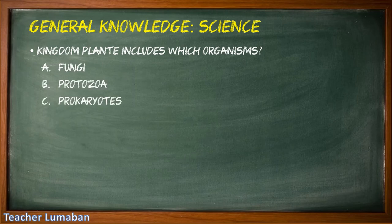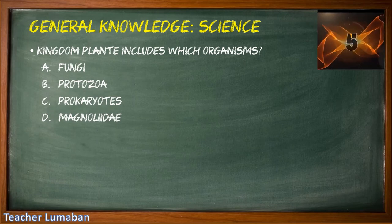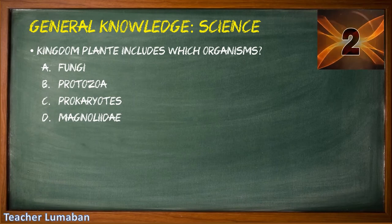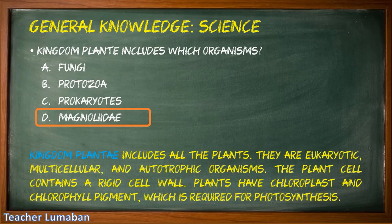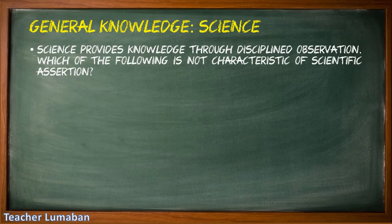Kingdom Plantae includes which organisms? Letter A: fungi, Letter B: protozoa, Letter C: prokaryotes, Letter D: Magnoliophyta. The correct answer is Letter D: Magnoliophyta. Kingdom Plantae includes all plants. They are eukaryotic, multicellular, and autotrophic organisms. The plant cell contains a rigid cell wall. Plants have chloroplasts and chlorophyll pigment, which is required for photosynthesis.